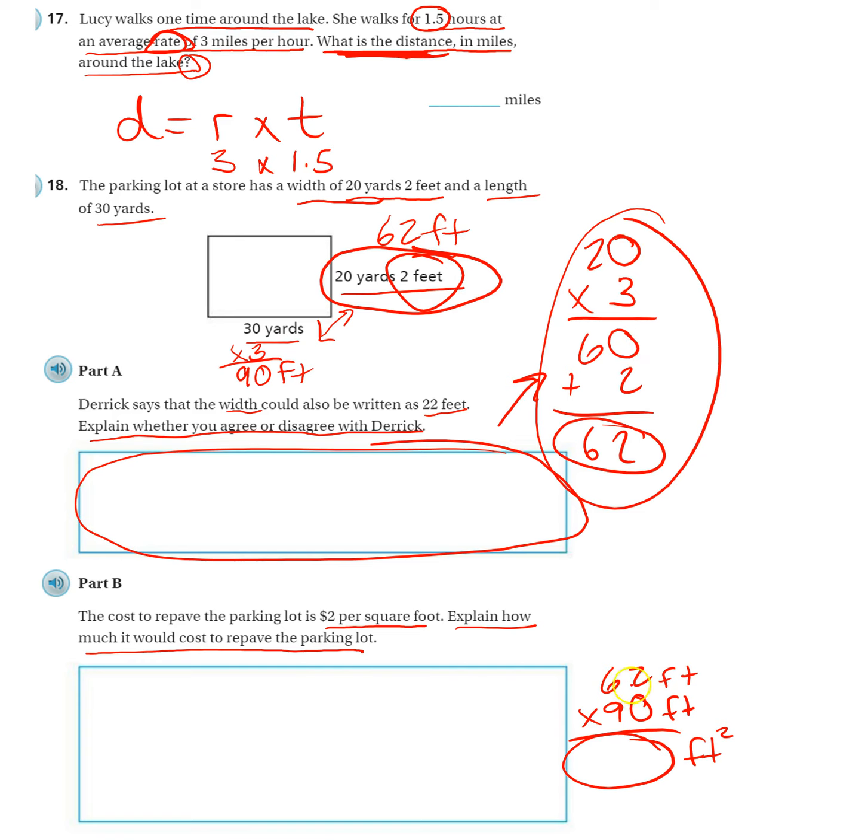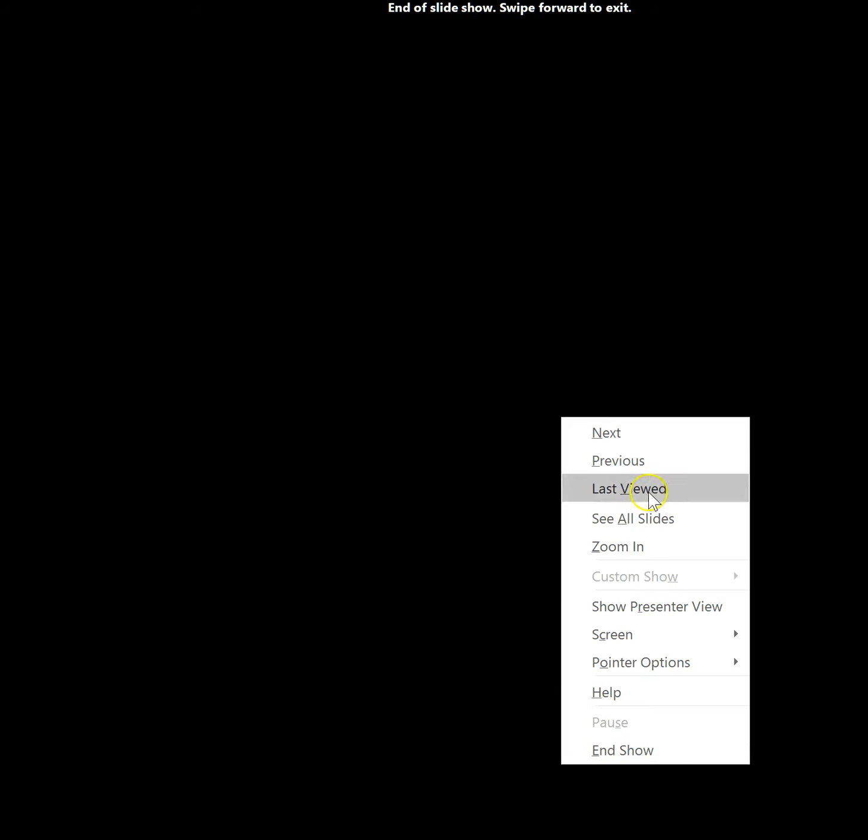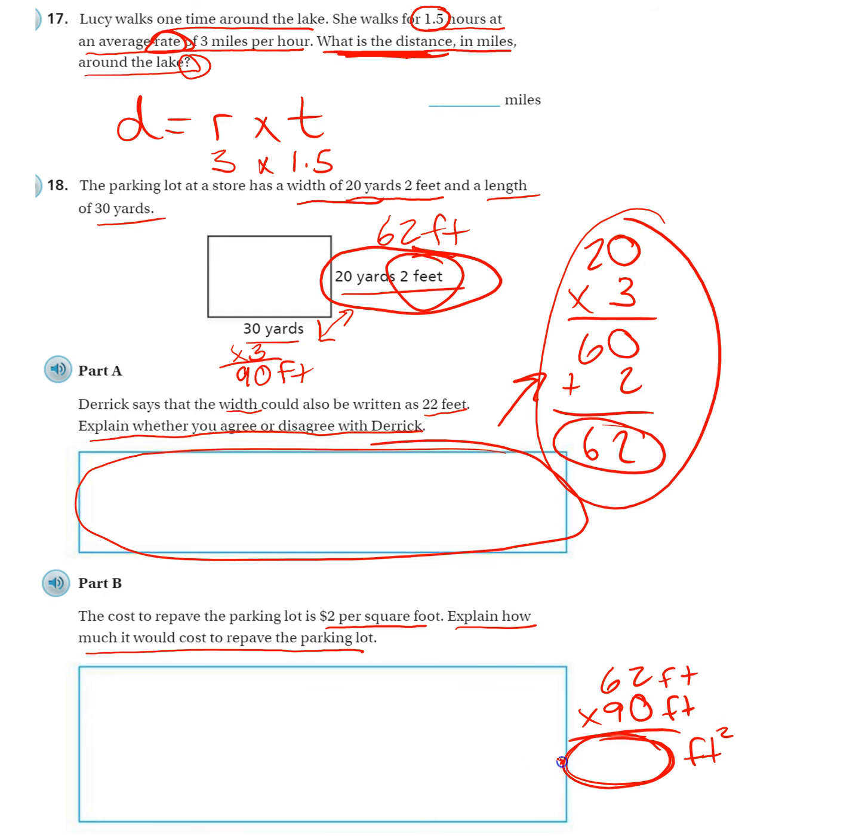And then you're going to get your number, 62 times 90, here. Once you get this answer, you're going to take this answer and multiply it by $2. And this will be your final answer that tells you the cost.